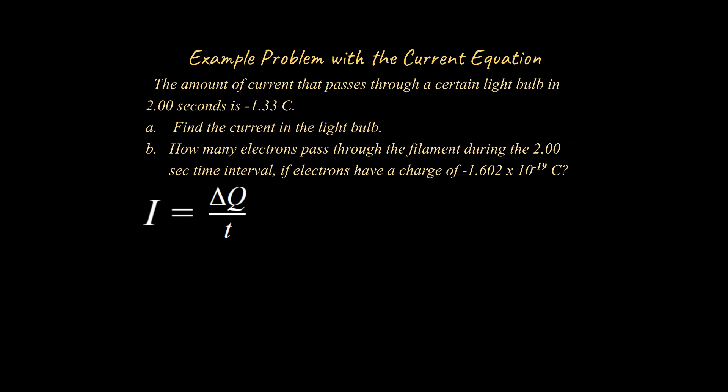Alright, so let's see an example problem where we use this equation and figure out what's going on. So the example problem we have says the amount of current that passes through a certain light bulb in two seconds is minus 1.33 coulombs. Find the current in the light bulb and how many electrons pass through the filament during the two second time interval. If electrons have this value of minus 1.602 times 10 to the negative 19 coulombs. So this is just a fundamental constant, a fundamental value of the charge of an electron in terms of coulombs. And the charge of a proton is exactly the same magnitude just with a positive value for its charge.